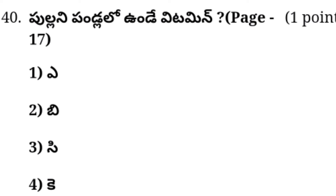Last question: Pullani pundle loo uundae vitamin. Option 1: Vitamin A. Option 2: Vitamin B. Option 3: Vitamin C. Option 4: Vitamin K. Answer — comment box below. Answer is Option 3: Vitamin C — Pullani pundle loo uundae vitamin — Vitamin C.